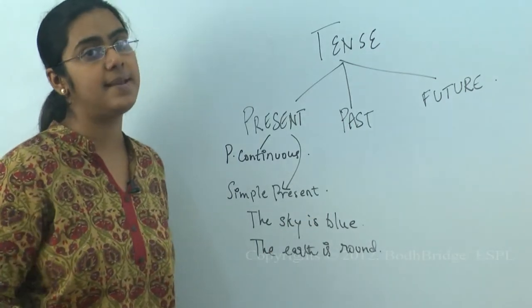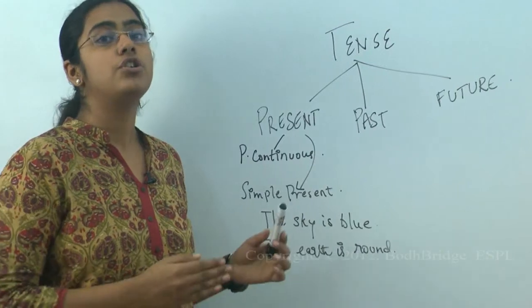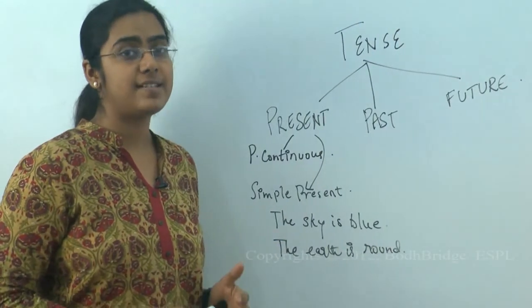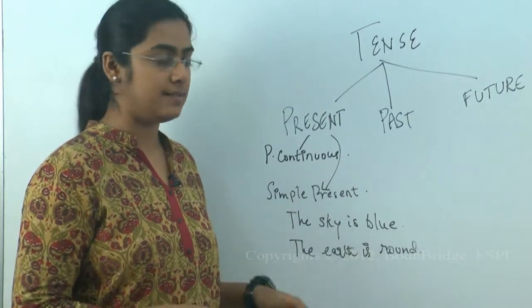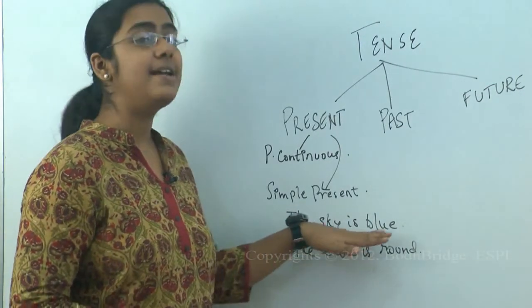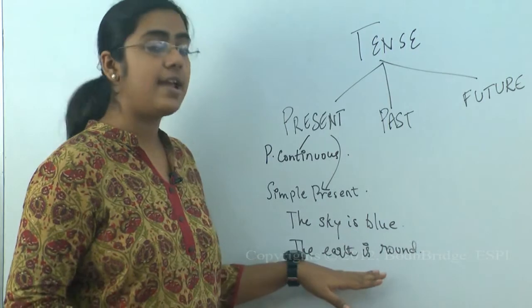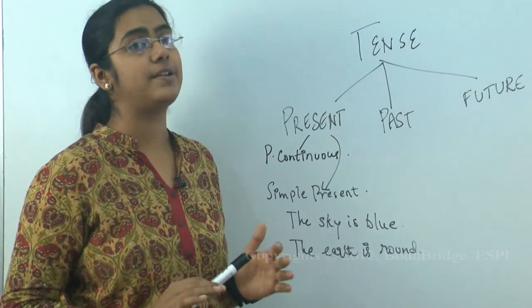Today, it is the same. Tomorrow, it will be the same. So, to state such universally acknowledged facts, you use simple present. The sky is blue. The earth is round. That is simple present.